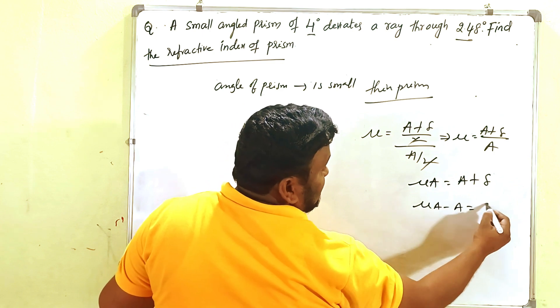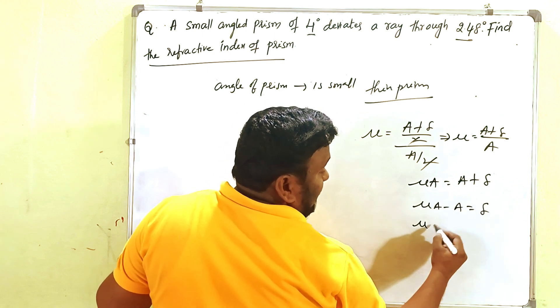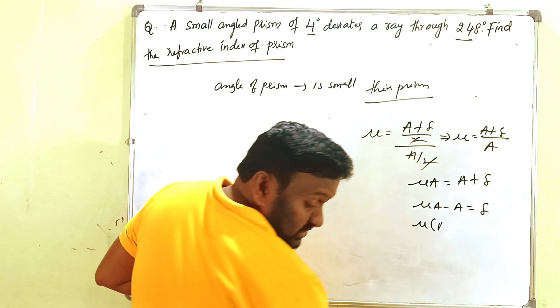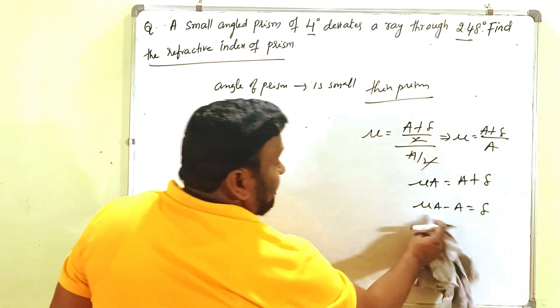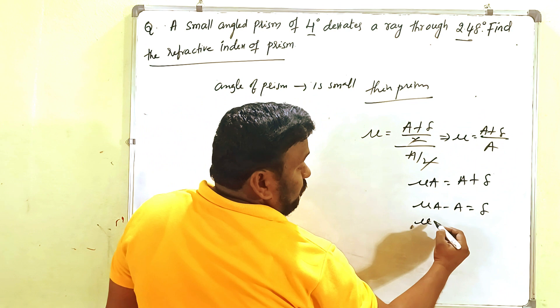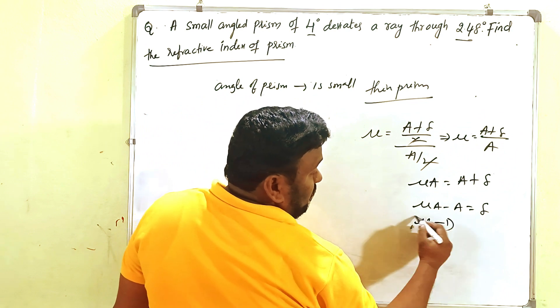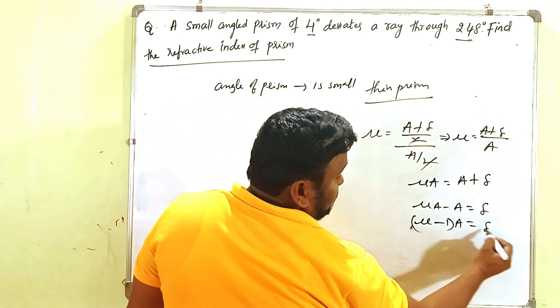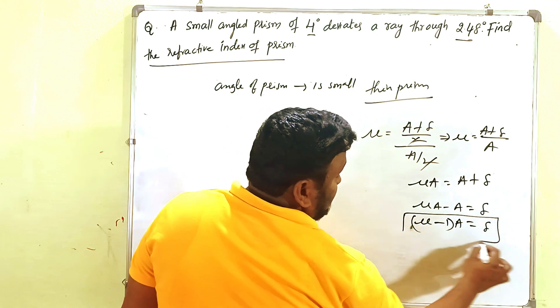From that, write mu A minus A equals delta. A is common, so we get (mu minus 1) times A equals delta. That is the formula you are going to use.